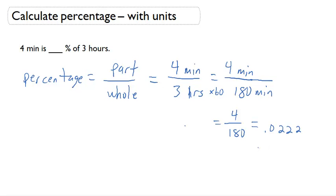And now I could change that to a percentage and write that as 2.22%. So 4 minutes is 2.22% of 3 hours.